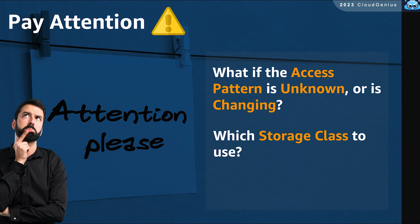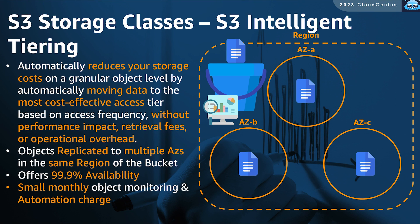So if the data is hot, we should use the Standard storage class; if it is not frequently accessed we can use the Standard IA. But what if I am not sure about my data — if it is going to be hot or not, if it is going to be frequently accessed or not? Or even if the access pattern for my data changes — it starts maybe as hot data but eventually cools down and becomes less accessed over time, or what if it becomes hot again? Can AWS help me with that? Definitely — we have got another storage class named S3 Intelligent Tiering.